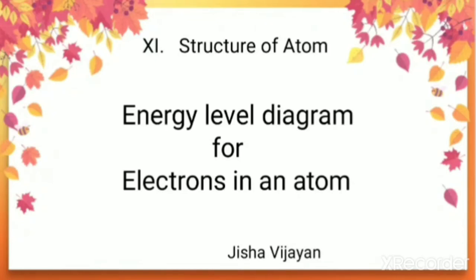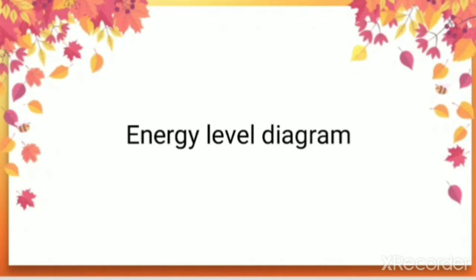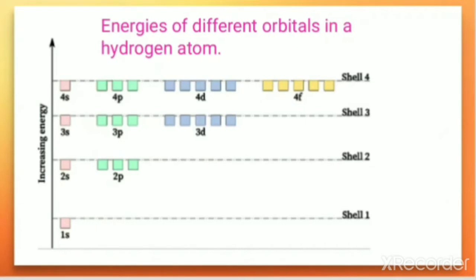Hello students, let us discuss the energy level diagram for electrons in an atom. The relative energies of various orbitals can be shown by an arrangement known as an energy level diagram. Let us first see the energy level diagram for the case of the hydrogen atom.